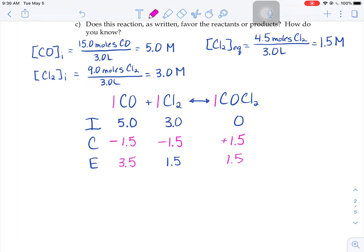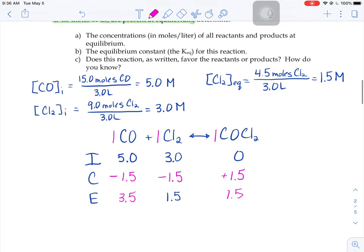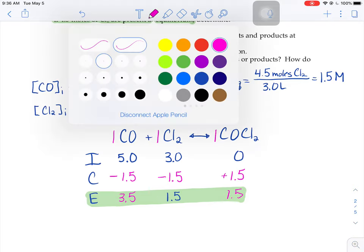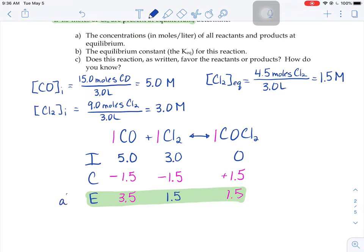it said, find the equilibrium concentrations of all reactants and products at equilibrium. E is your equilibrium line. So these right here, that's your answer to part A. All these are concentrations, so they would all have units of capital M. They're all molarities. There's part A.